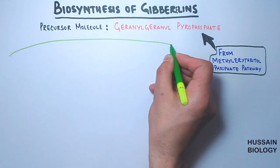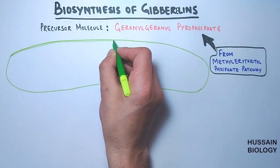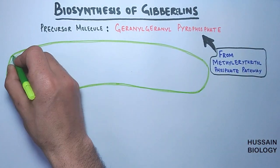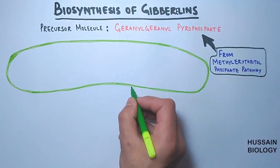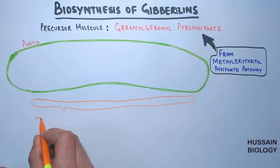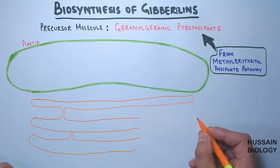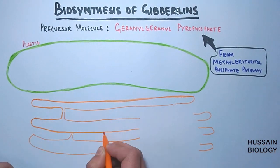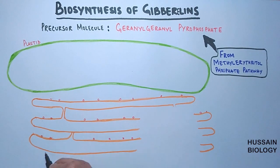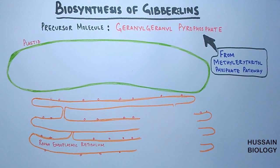The pathway starts from the precursor molecule geranylgeranyl pyrophosphate, which is found in plastids. So the first set of reactions of this pathway occurs in the plastid, and the last set of reactions occurs in the endoplasmic reticulum of the cell, as some enzymes of this pathway are present within the endoplasmic reticulum — especially in the rough endoplasmic reticulum.